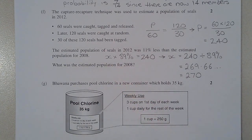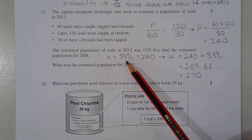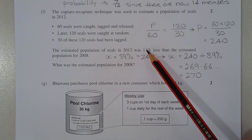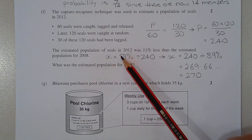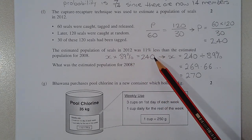So let X represent the population of seals in 2008. And if we multiply that by 89%, which represents a reduction of 11%, so 100 minus 11 equals 89. So X times 89% is equal to 240.